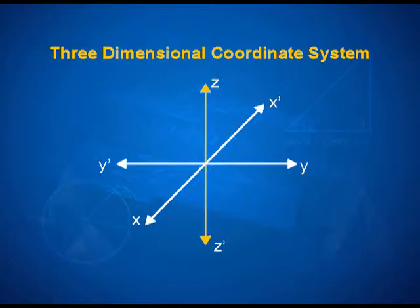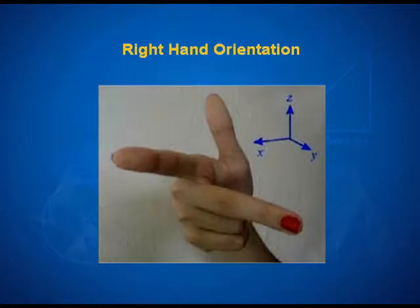Now, how we define and how we use the orientation of these three axes is governed by what is called the right hand orientation. So, we are looking at a system that is being followed as a right hand orientation which is defined as you can see here.